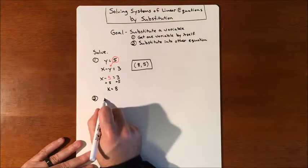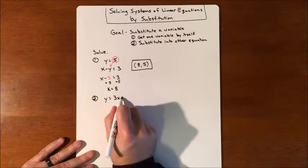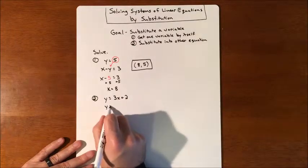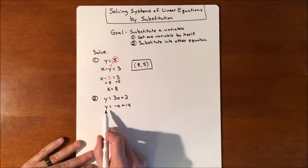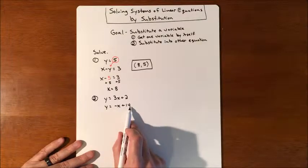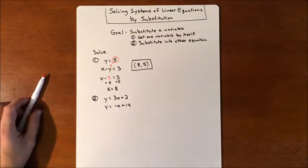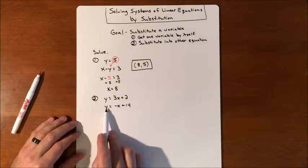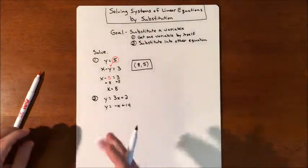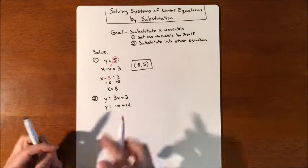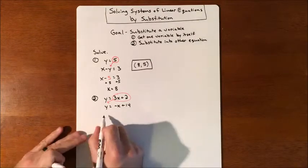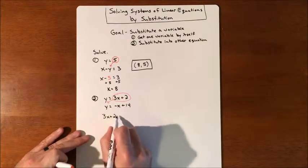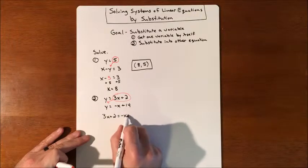Second equation: both equations are going to be in slope-intercept form. The first equation is y equals 3x plus 2, and the second is y equals negative x plus 14. This is ready for substitution because they both equal y, meaning they're equal to each other. So you can substitute one expression in for y in the other equation, giving us 3x plus 2 equals negative x plus 14.